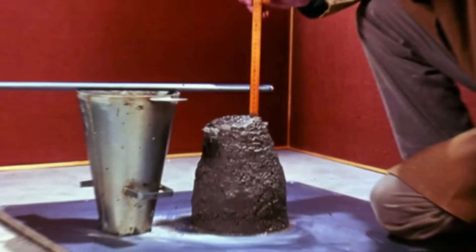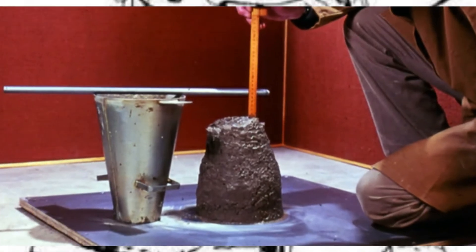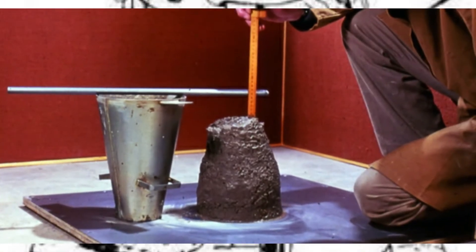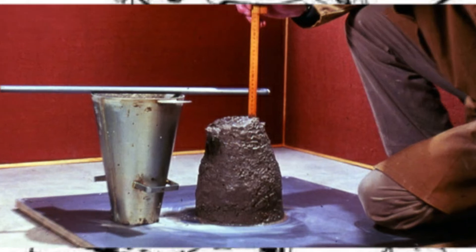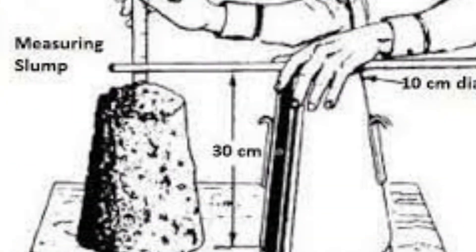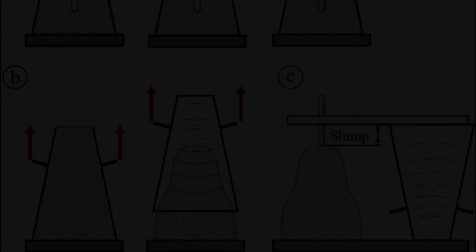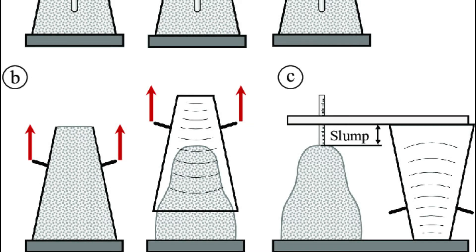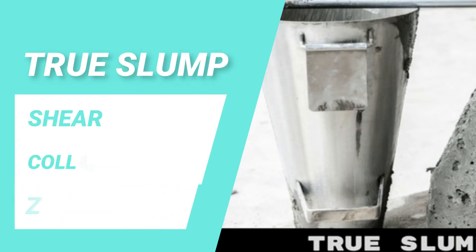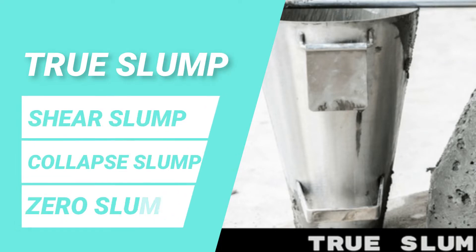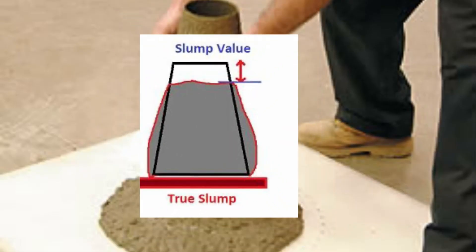Quantitatively, slump is the difference between the initial and final heights of concrete as measured during the concrete slump test. The concrete slump can be classified into four different types: true slump, shear slump, collapse slump, and zero slump.